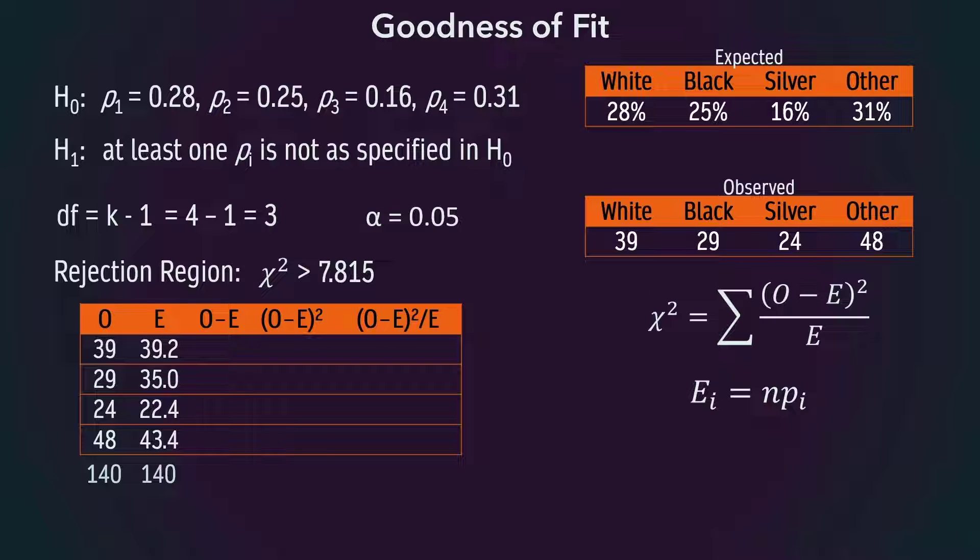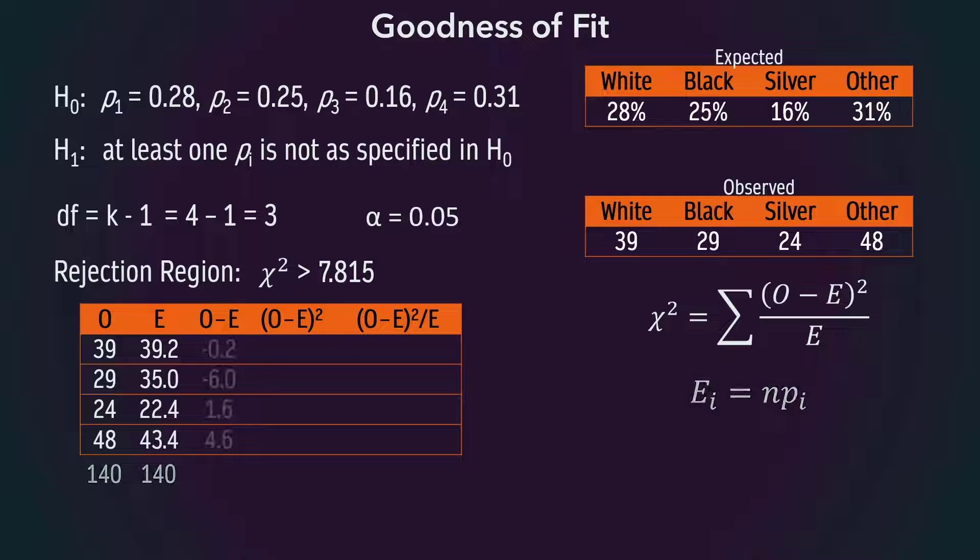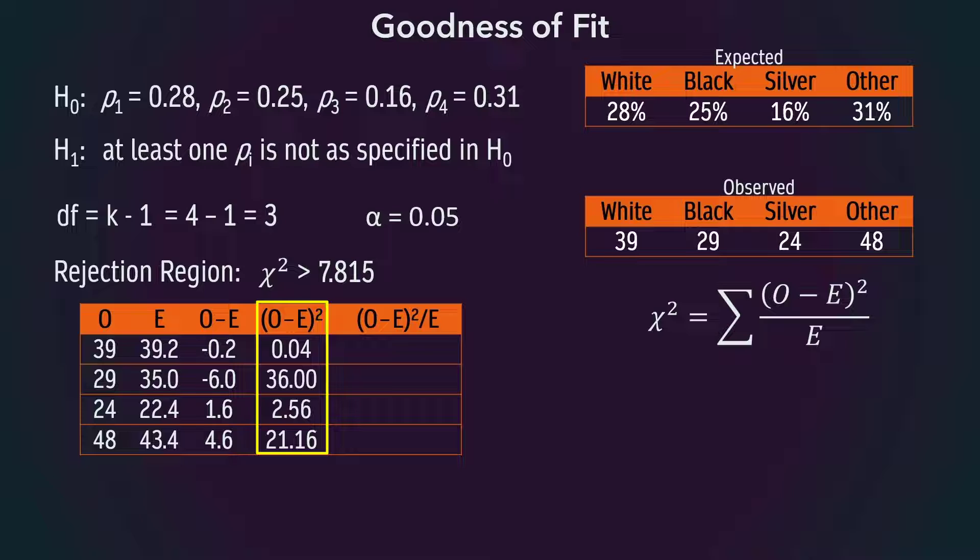Another requirement is that of randomization. Since we assume we have a random sample at the beginning, then that requirement is also satisfied. Next, we compute the difference between the observed and expected here. Then square the differences. And finally, divide the squared differences by the expected.